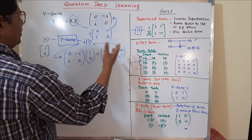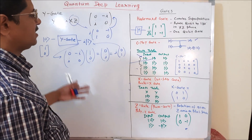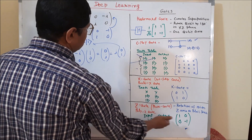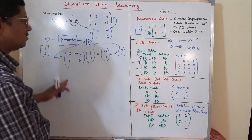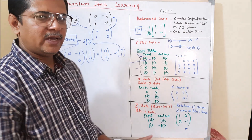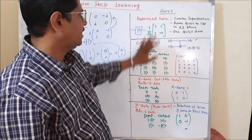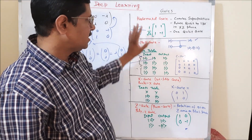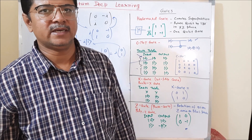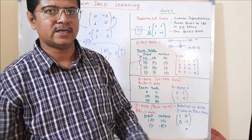The last one is the I gate, which is simply the identity gate. When you pass 0, it returns 0; when you pass 1, it returns 1. So there is no need to explain much. Up to here, we have completed the explanation of all the gates. Now, we will directly use those gates in our circuit design, and I will try to explain how we can design our quantum circuits.